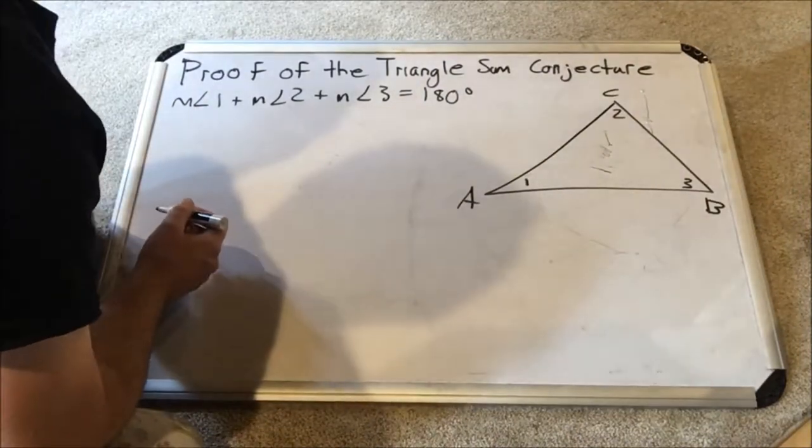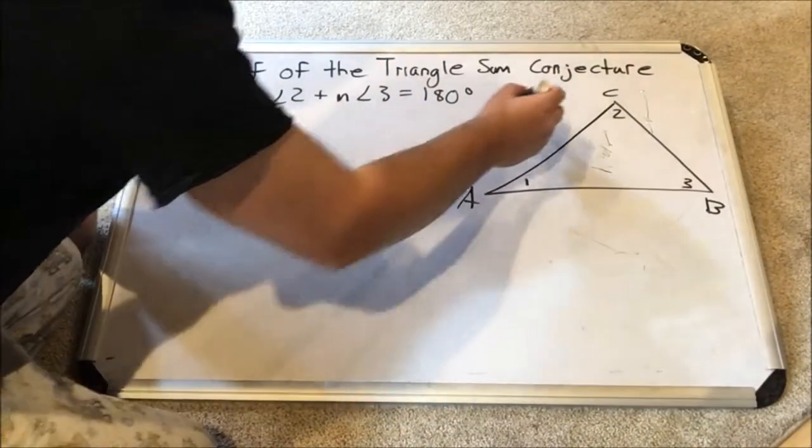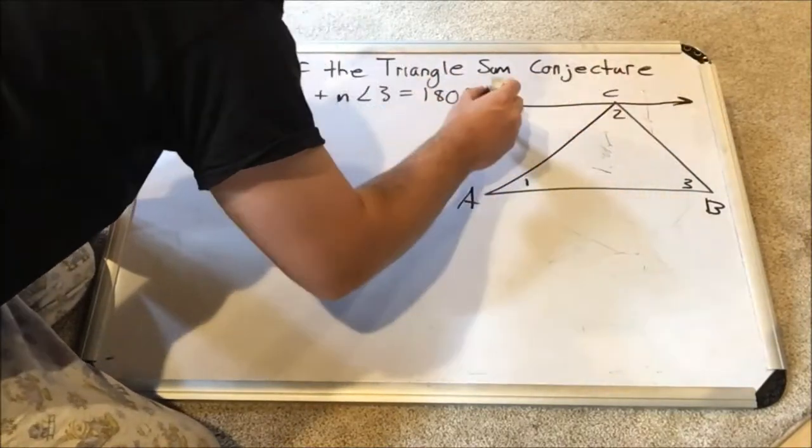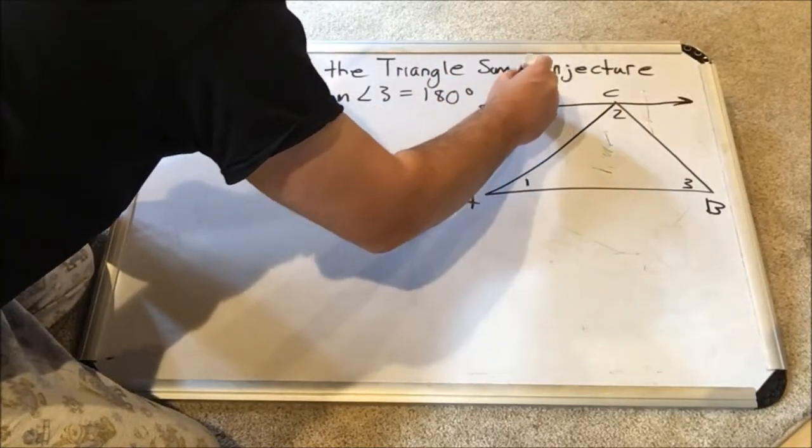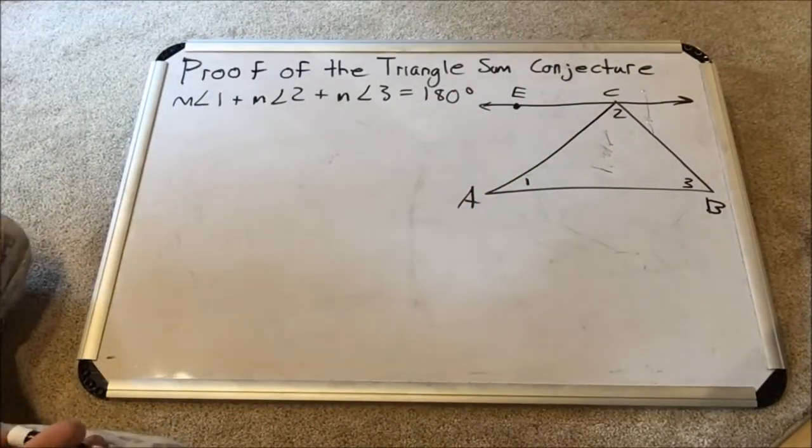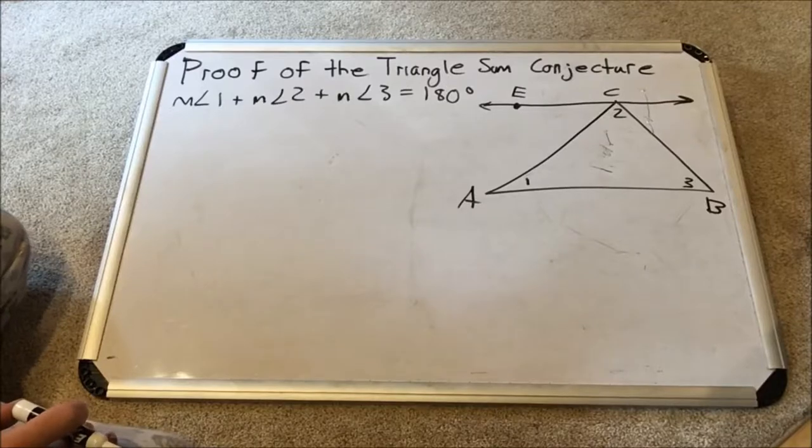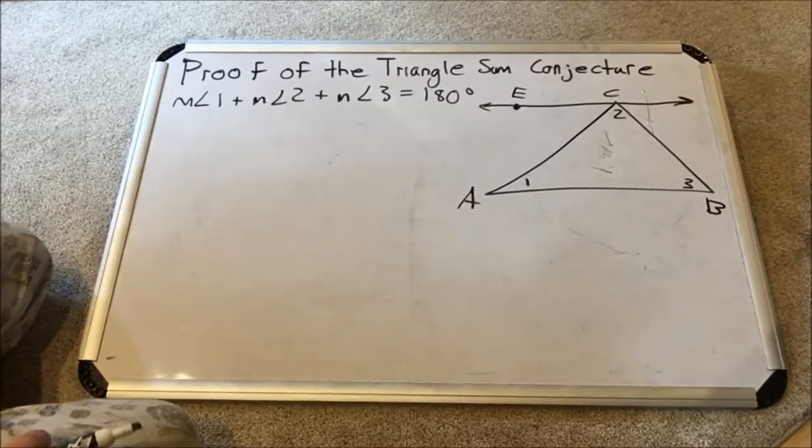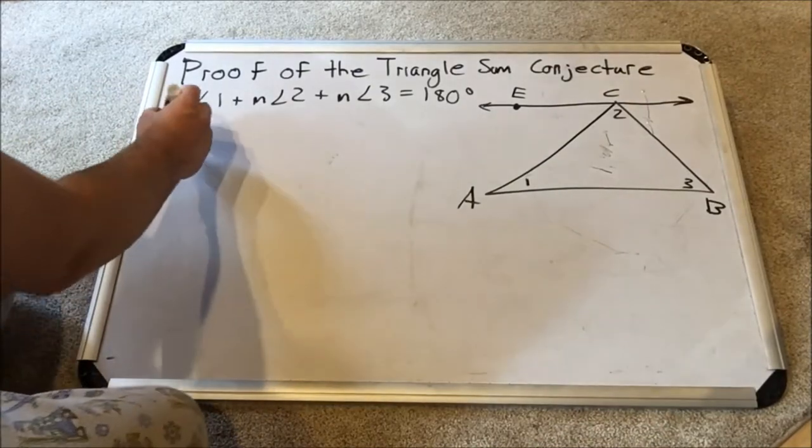What I'm going to do is cleverly make a line parallel to side AB. Now who says I could do this? Well, something called the parallel postulate. If you have a compass and a straight edge, you can actually create a line that is parallel to a given line through a point not on the given line. And that is the parallel postulate.